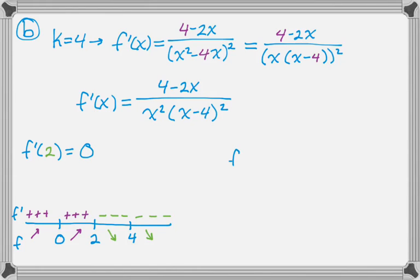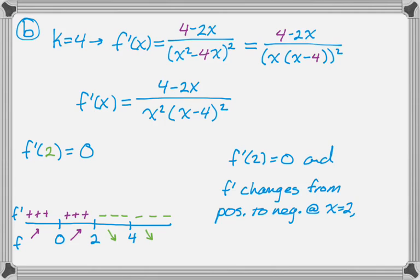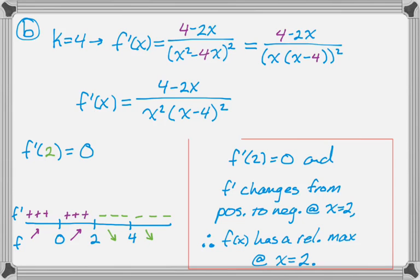So let's write that up. So f prime of 2 is 0, and f prime changes from positive to negative at x equals 2. Therefore, f(x) has a relative maximum at x equals 2. And that's all there is to part B.